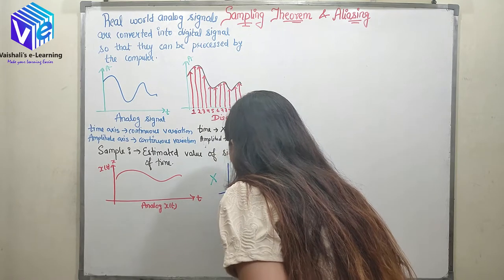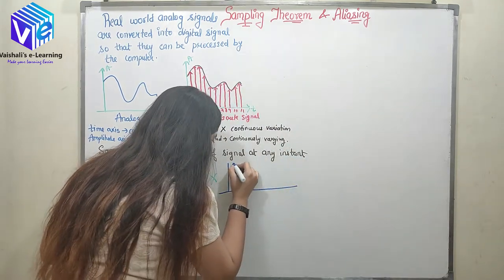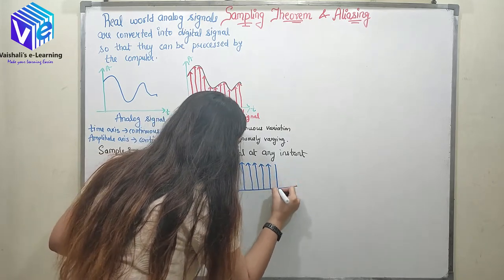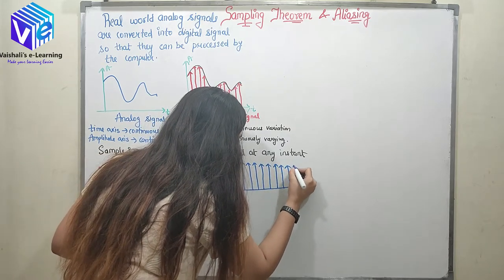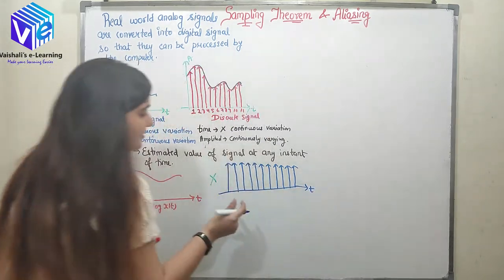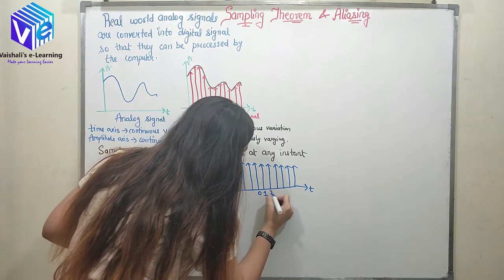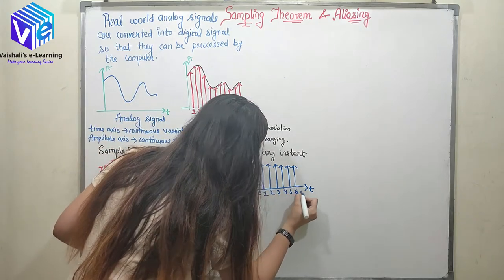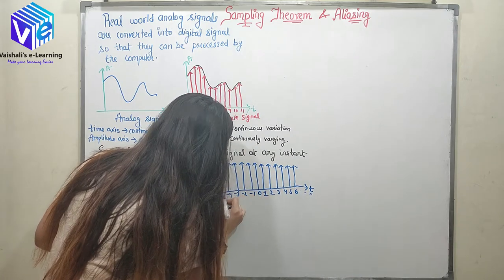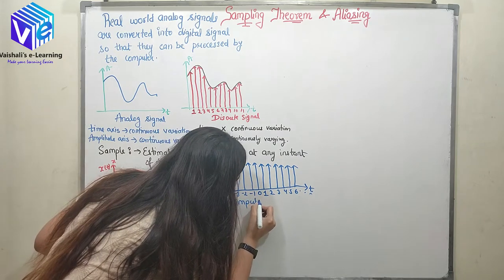What is an impulse train? An impulse train is represented like this — it is also on the time axis. This is 0, 1, 2, 3, 4, 5, 6 and so on, and here minus 1, minus 2, minus 3, minus 4 and so on. This is my impulse train.